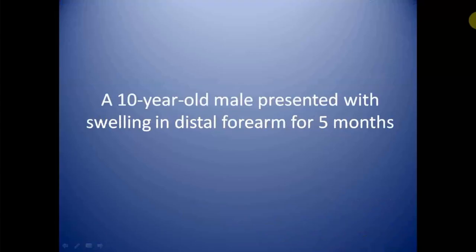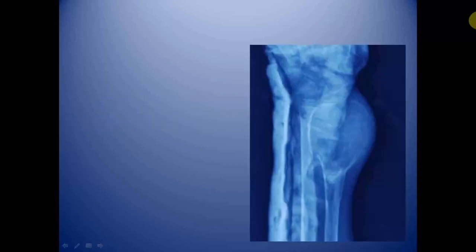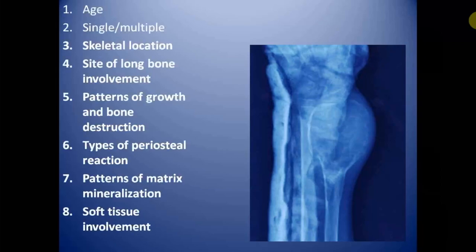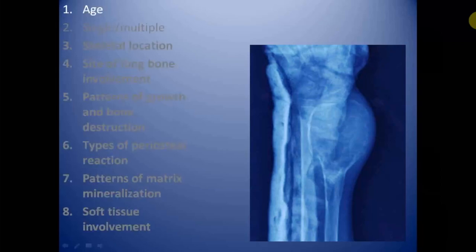This is the case of a 10-year-old male who presented with swelling in the distal forearm for five months. This is the radiograph of the distal forearm and wrist of the patient, which is partly under plaster cast, and we will review this lesion using the same systematic headings.